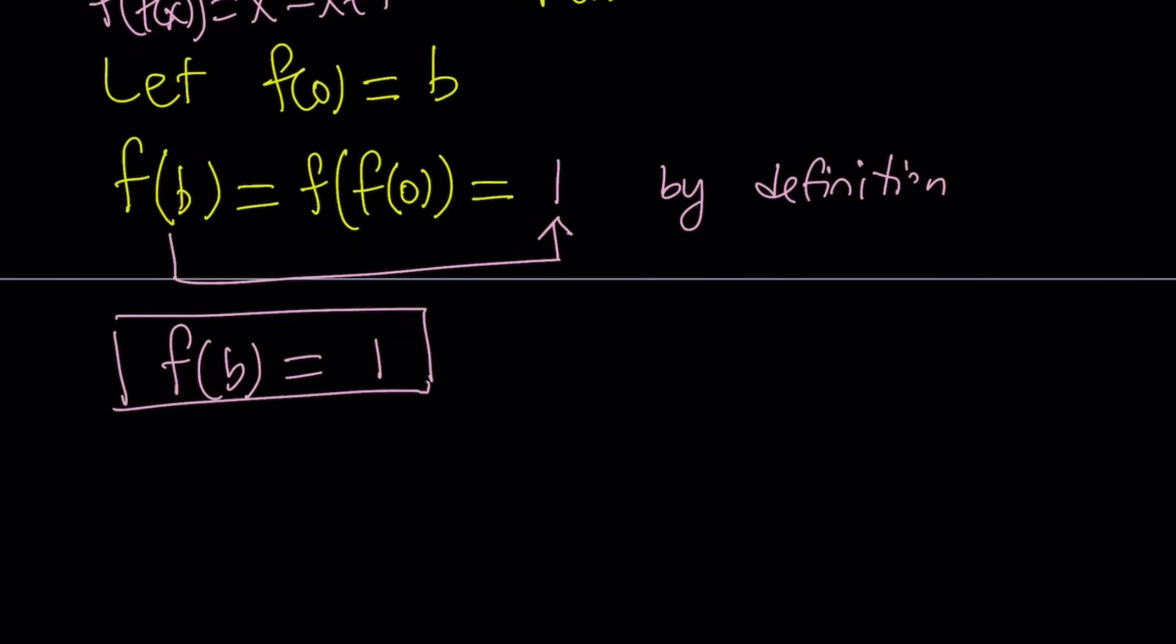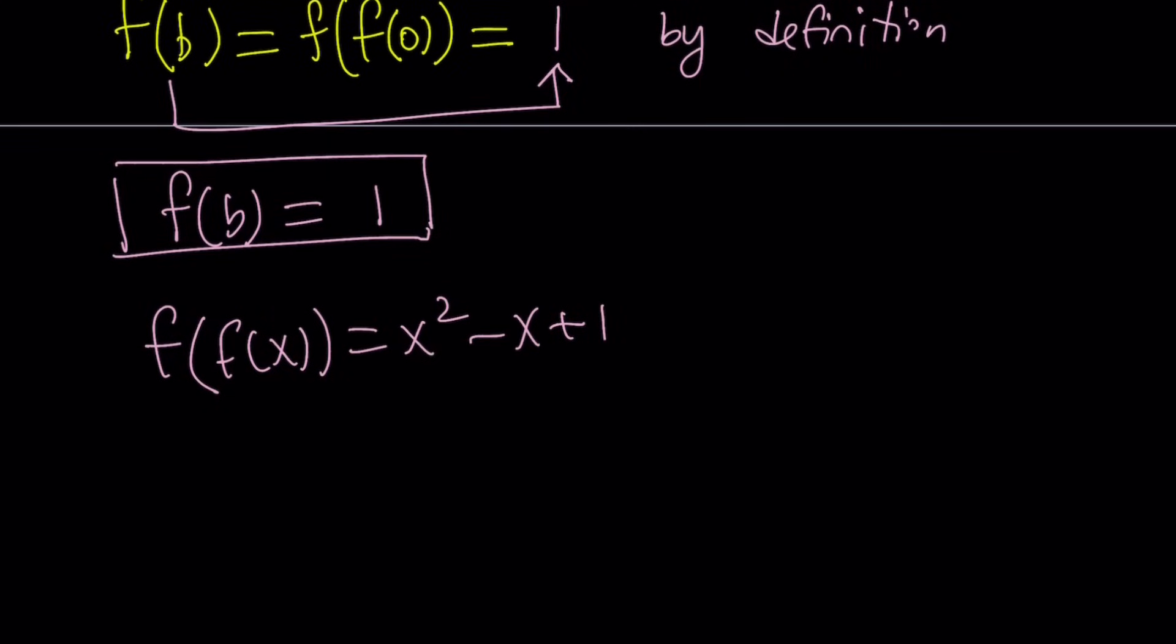How do we use this information? We're still not at the level of f of 0. Here's what we're going to do. We know f of b is 1, so why not try to find f of f of b? Something that we can always do with the composition function, because here we see the composition of f with itself. So f of f of x one more time is equal to x squared minus x plus 1. Now let's replace x with b. That gives us f of f of b is equal to b squared minus b plus 1.